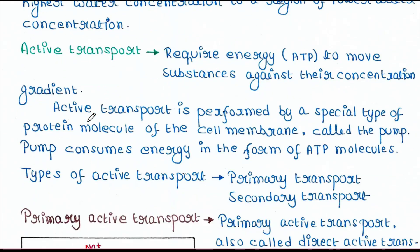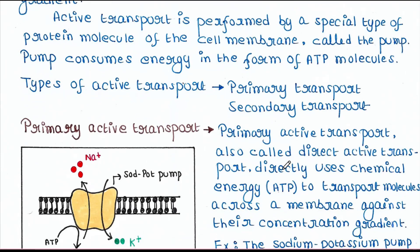Next is active transport. Active transport requires energy in the form of ATP or something else to move substances against their concentration gradient — that means from lower to higher concentration, just opposite to passive transport. Active transport is performed by a special type of protein molecule of the cell membrane called the pump, which consumes energy in the form of ATP molecules.